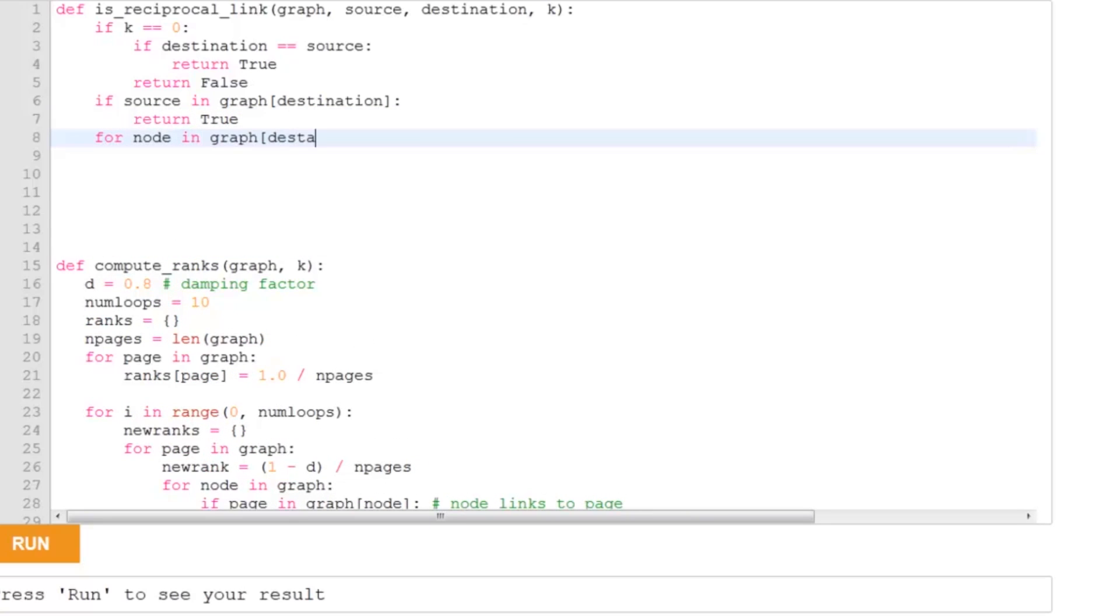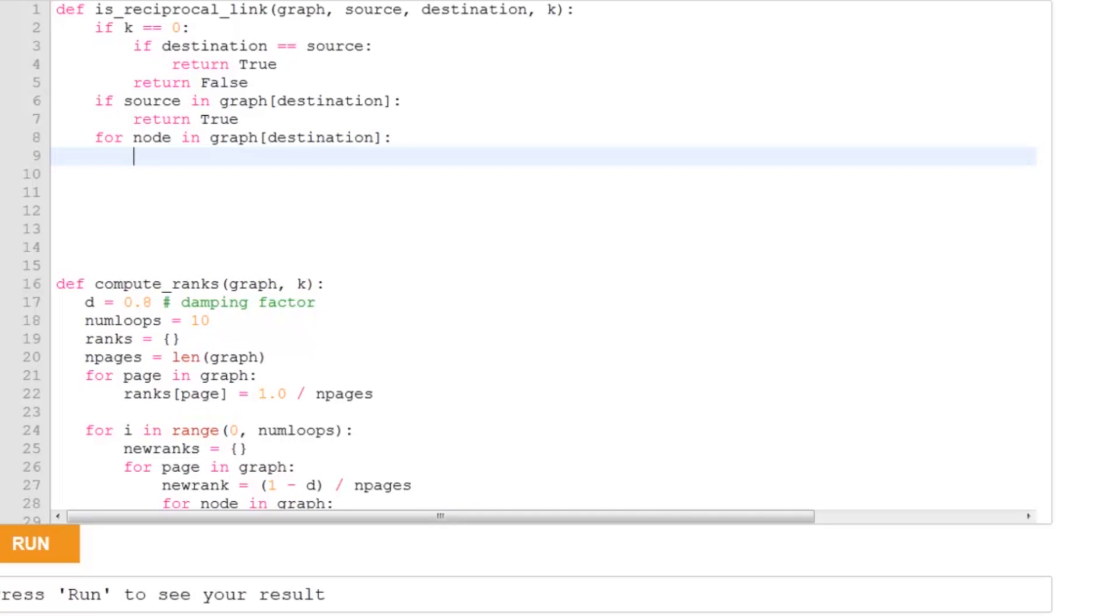we're going to look at every node that is linked to from destination and we're going to check if there's a path of links from that node to the source of length K minus one. We've already used one step going from destination to node, that leaves us with K minus one steps left.